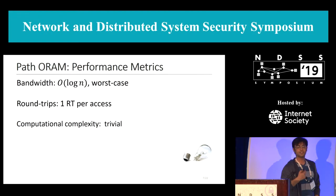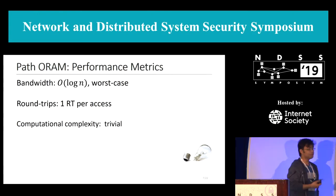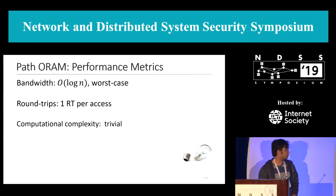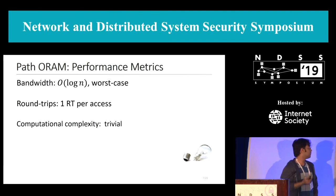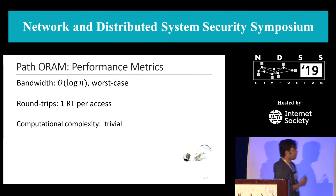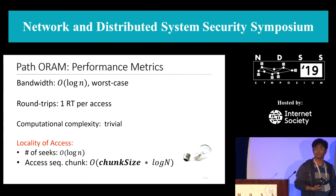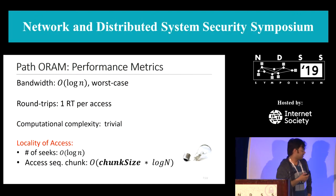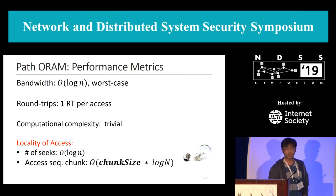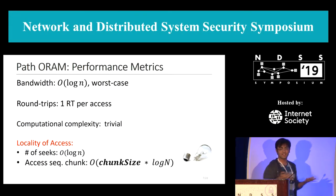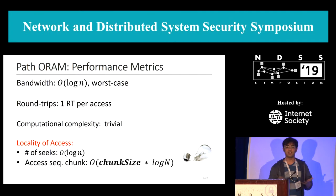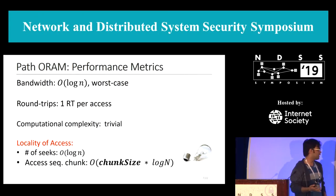Now let's talk about performance metrics. Like most ORAM work, path ORAM is optimized for bandwidth — the number of physical blocks transferred to complete one logical request. In terms of round trips and computational complexity, at least server-side compute, path ORAM is optimal. But we have been missing a critical metric while optimizing ORAMs, and that is locality of access — how many disk seeks you would incur on the server side to complete one logical request. This is important because large-scale data is stored on disks with variable latencies, and randomized I/O adds a lot of overhead to performance.